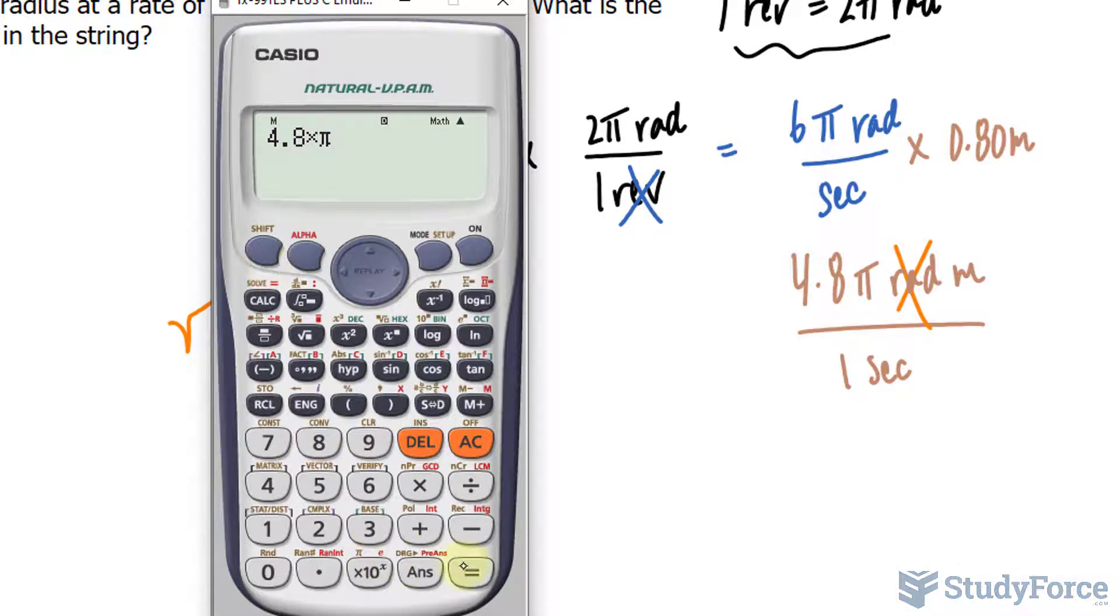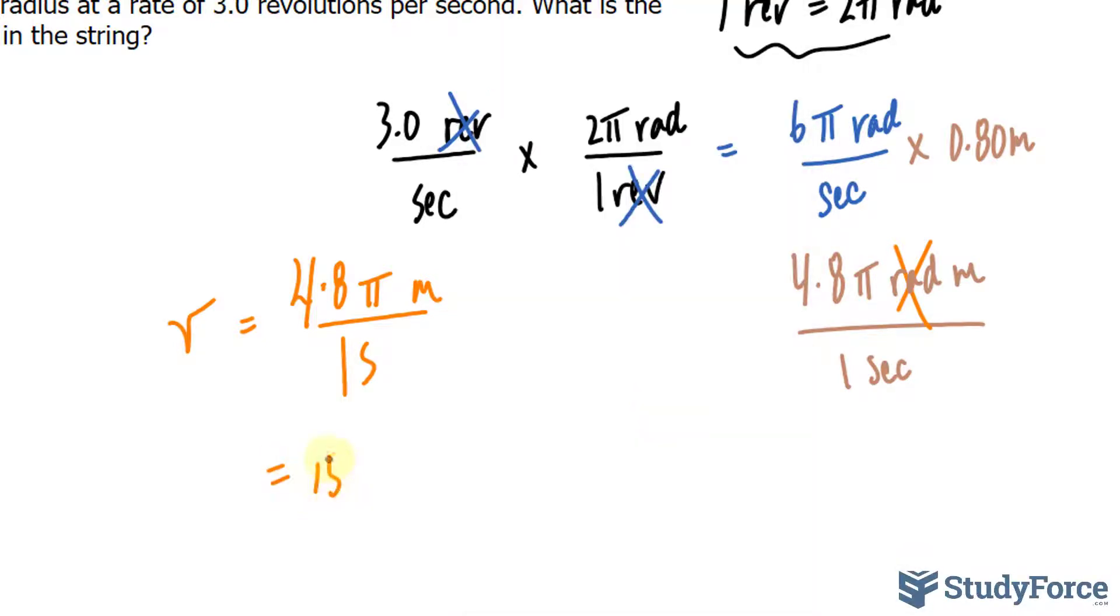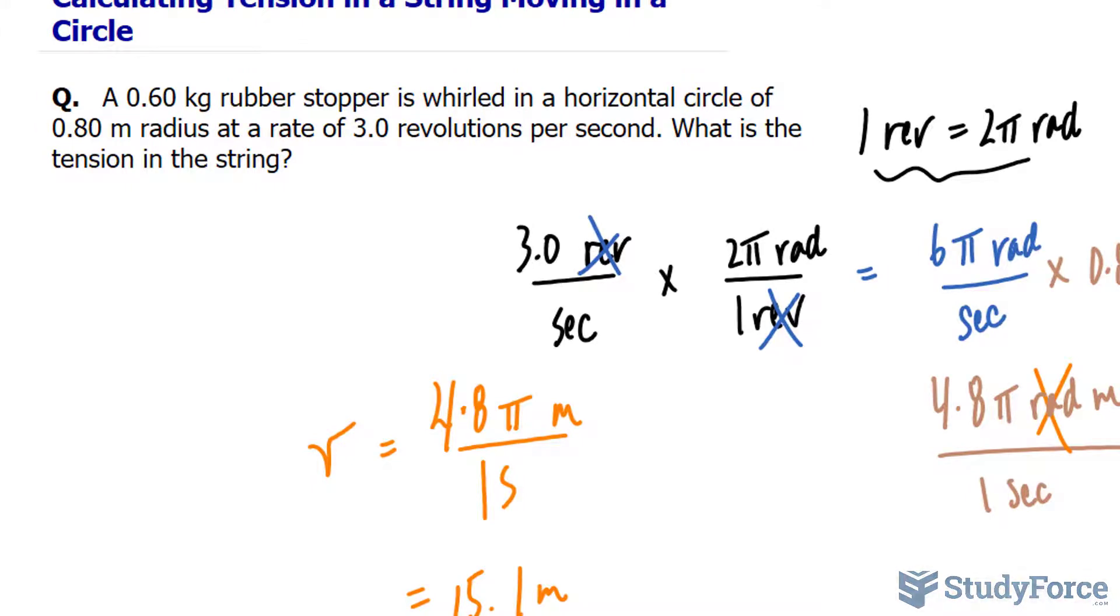And because this stopper is going in a circular motion, the acceleration here is centripetal acceleration, or radial acceleration, which is, if we look at a diagram, if something's moving in a circle, that's the acceleration of the object towards the center of the circle.